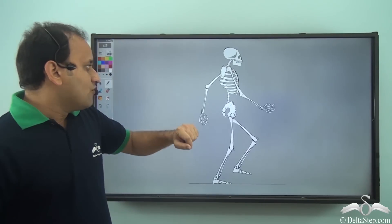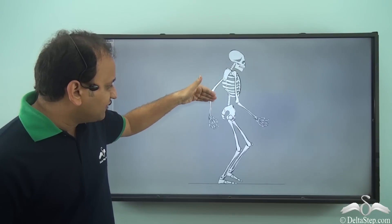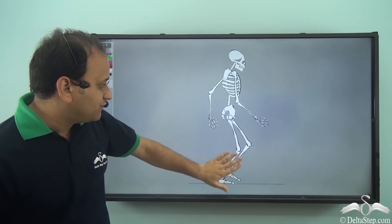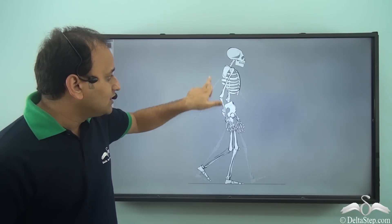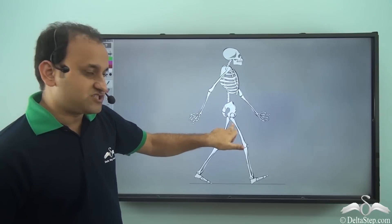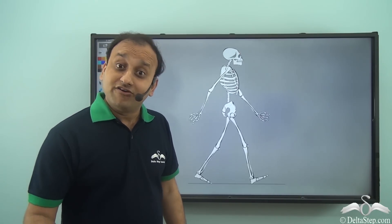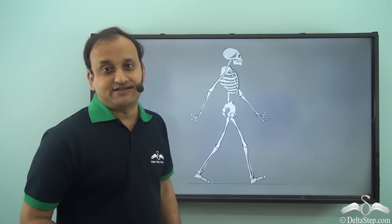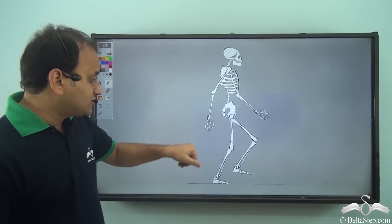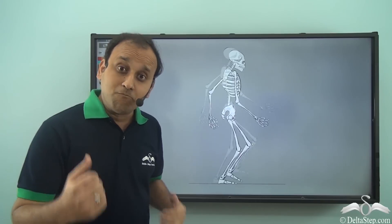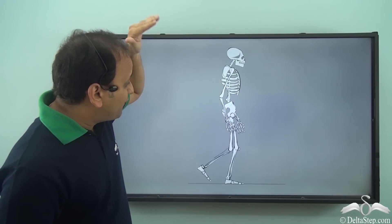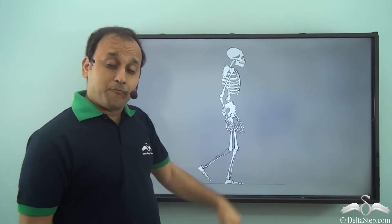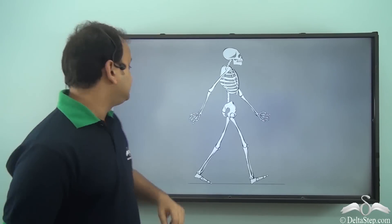When we move, there are so many different parts moving at the same time, and all these movements are possible because we have joints. Without the joints, we couldn't move at all. So joints are a very important part of our body.